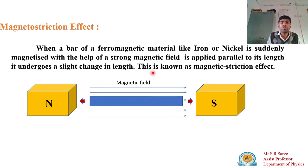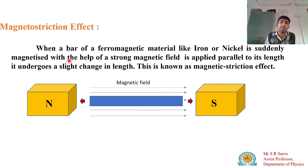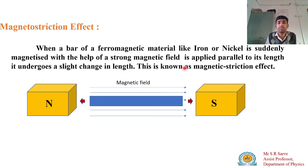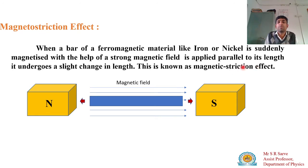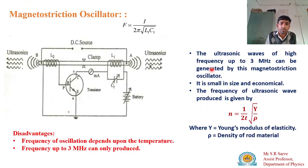Formally: when a bar of ferromagnetic material like iron or nickel is suddenly magnetized with the help of a strong magnetic field applied parallel to its length, there is a slight change in its length. When we magnetize and demagnetize it, this slight change in length occurs. This effect is known as the magnetostriction effect — 'striction' meaning elongation or stretch.